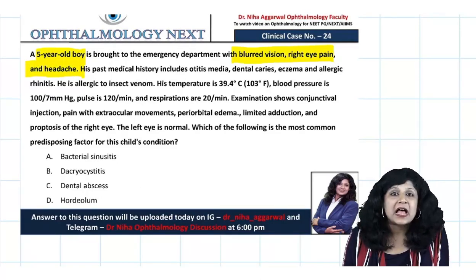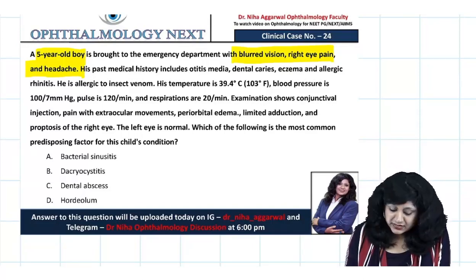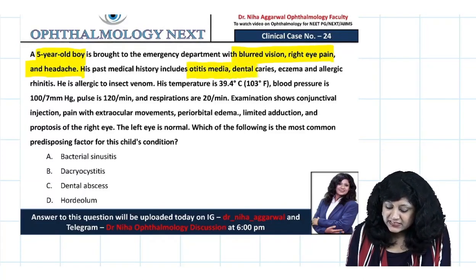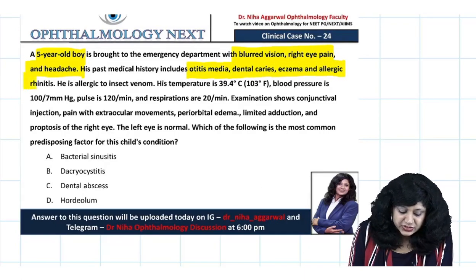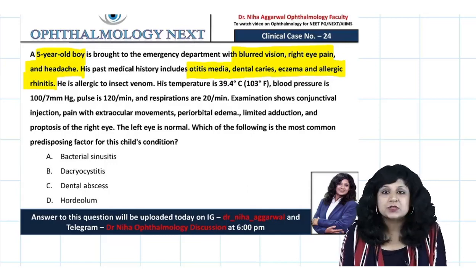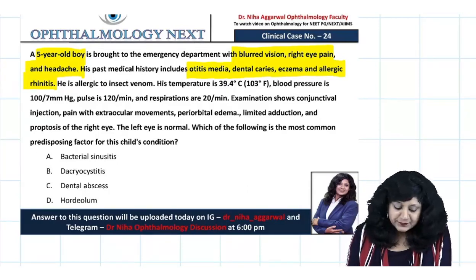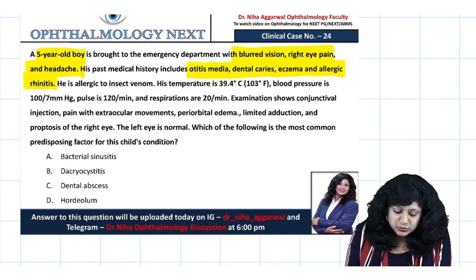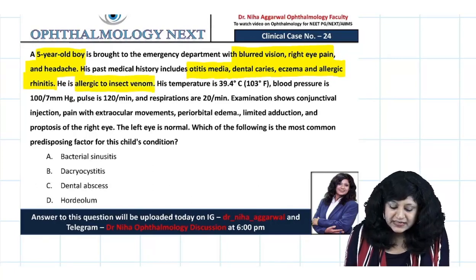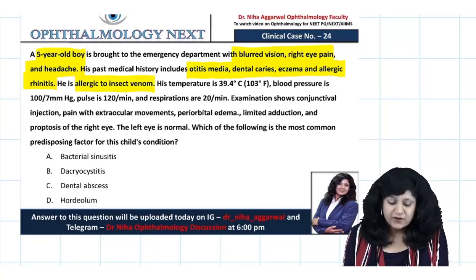His past medical history is very very significant. We have otitis media, dental caries, eczema and allergic rhinitis. So this patient has an allergic history and he is also allergic to insect venom.